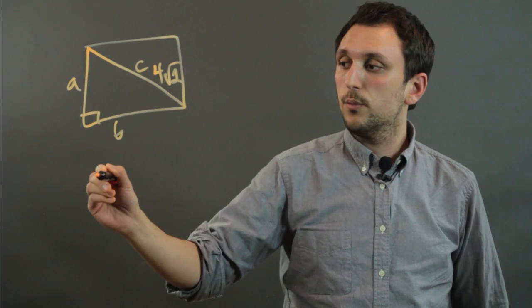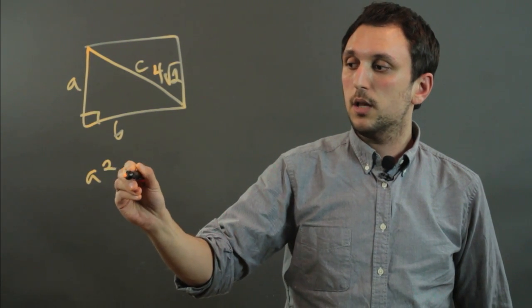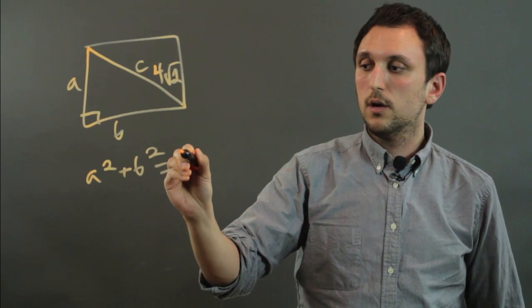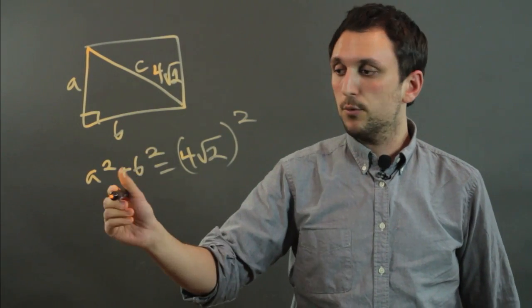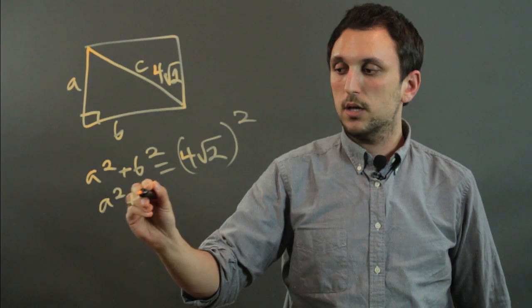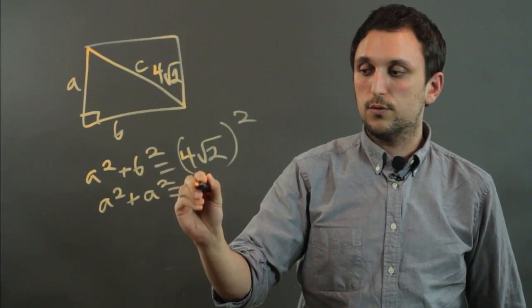So we would say a squared plus b squared equals 4 root 2 squared. But a and b are the same, so we can actually just say a squared plus a squared equals 4 root 2 squared.